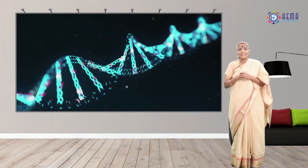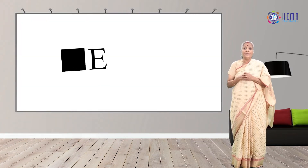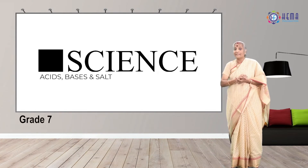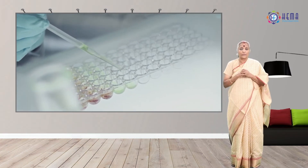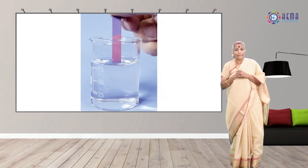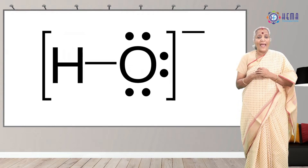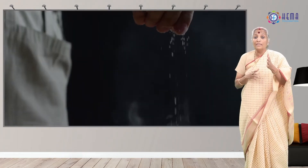Let us see how science integrates the value of self-strength. I am taking here in science a topic on acids, bases and salts. This is from grade 7. An acid is defined as a substance that has hydrogen ions and whose water solution tastes sour, turns blue litmus red and neutralises bases. A substance is called a base when it has more hydroxyl ions and if its aqueous solution tastes bitter, turns red litmus blue or neutralises acids. Salt is the neutral product.